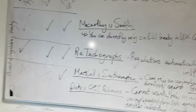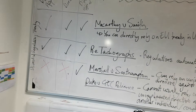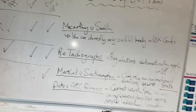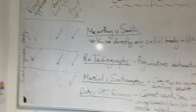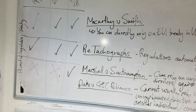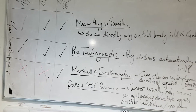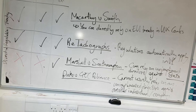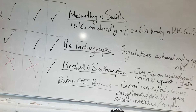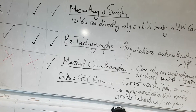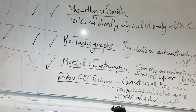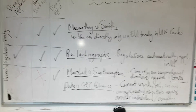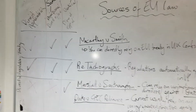We also have regulations. These are issued by the Council of the European Union, and they are binding on member states and automatically apply. Finally, we have directives. These are also issued by the Council of the European Union, but member states have to bring these into their own law so that there is harmony across the EU, though as member states we get to decide how this is done.